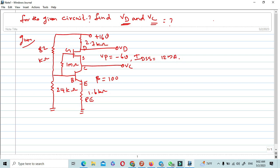Coming to the solution, first step we need to find RTH and VTH from the BJT side.